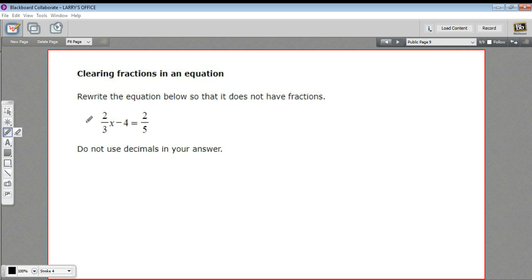If I multiply this side here by 3, it would get rid of this 3 in the denominator. If I multiply this side by 5, it would get rid of that 5, but you have to do the same thing on both sides of the equation.